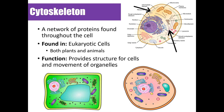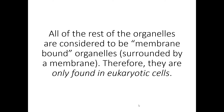The cytoskeleton is made of thread-like fibers and proteins found throughout the cell. It's found in eukaryotic cells — both plant and animal cells. Its function is to provide structure and support movement of different organelles, giving the cell its shape. This is especially important for animal cells that don't have a cell wall. From here on out, all organelles we discuss are membrane-bound and found only in eukaryotic cells.